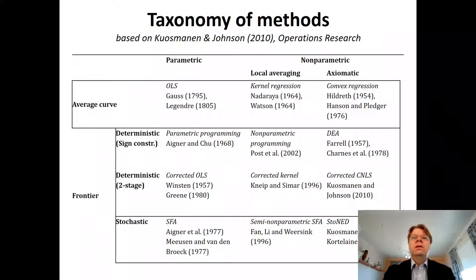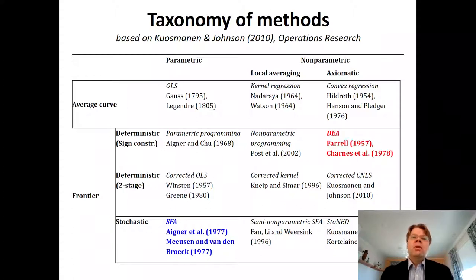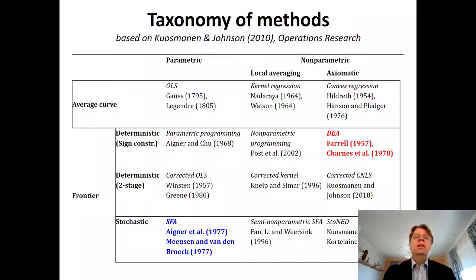We will discuss a variety of these techniques during the course. In the productivity and efficiency analysis literature — recalling the five most cited articles from my first lecture — there were papers by Charnes, Cooper, and Rhodes; Michael Farrell; and Aigner, Lovell, and Schmidt in the top five. Those papers relate to Data Envelopment Analysis, or DEA, indicated in red in this slide, while the Aigner, Lovell, and Schmidt paper refers to stochastic frontier analysis, indicated in blue.